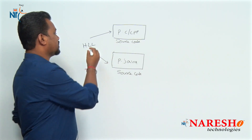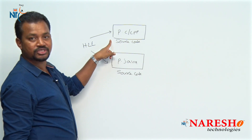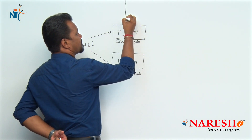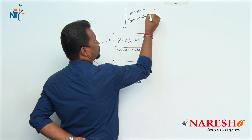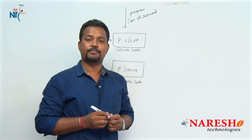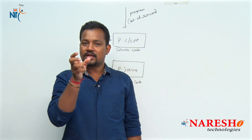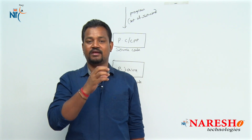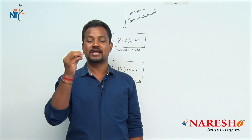High-level language programs are easily understandable by users because they are constructed from user-understandable words. Whenever we write a program in C, C++, or Java, the program must be sent for the compilation stage. Compilation means after writing a program, we check whether the program has been constructed within the rules and regulations of the language or not — this process is called the compilation process.